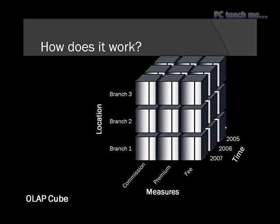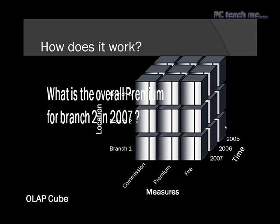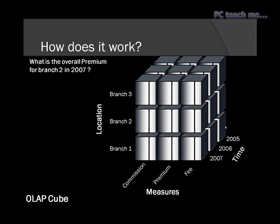So let's see how that would look in a cube format. It would look something like this, where we would have our branches going down the side, our measures — for example, rather than just having one figure we could have commission, premium, fee, etc. — and then also off to the side the years: 2007, 2006, 2005. So let's ask a question of the cube: what is the overall premium for branch 2 in 2007? The cube has already done that work for you overnight, so all you would do is almost like coordinates on a map — just choose the areas you want to go to. So you would select branch 2, select the premium, and then the year, and it would select that particular area of the cube straight away and pull those values out.